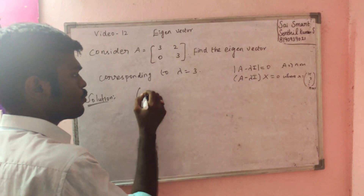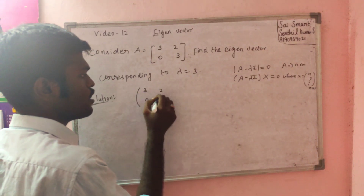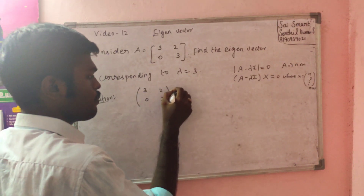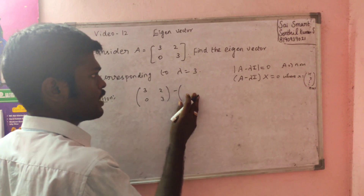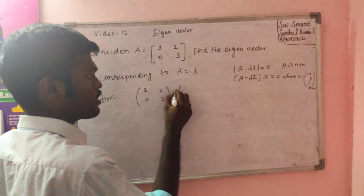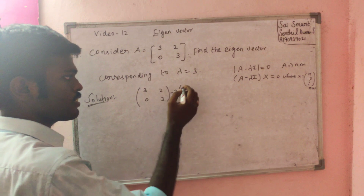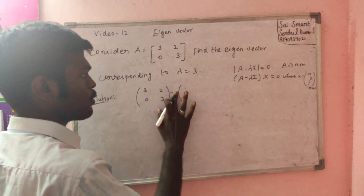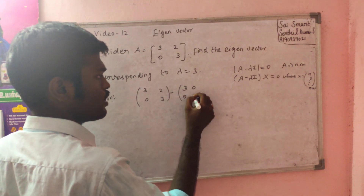A minus lambda I is equal to [3, 2; 0, 3] minus lambda times I. With lambda equal to 3, 3 times I equals [3, 0; 0, 3].